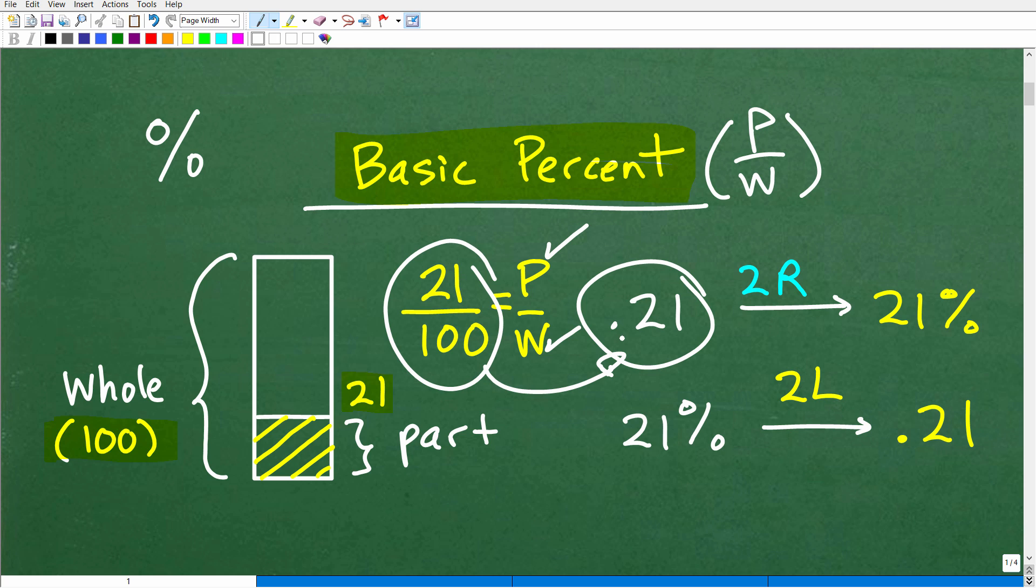But again, right here, we are not at a percent. So we're at a decimal. So how do we go from a decimal to a percent? Well, what you do is you scoot that decimal point two places to the right, which is effectively taking that decimal point to one and multiplying by 100.